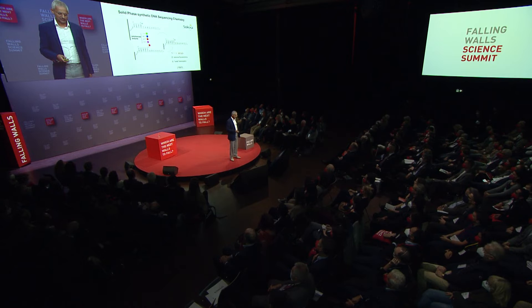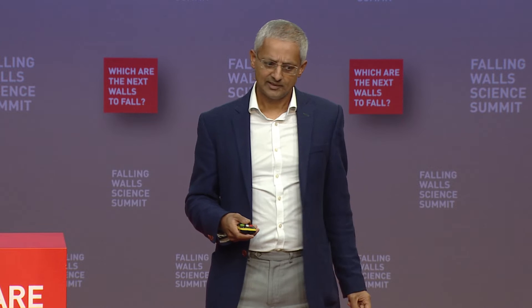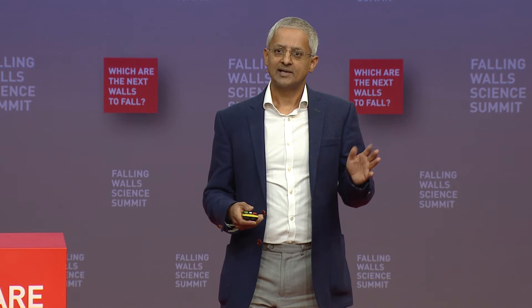The idea was to hijack the machines that nature uses to copy one strand and produce a complementary strand. Shown here on the top left, there's a single strand which is a template, and there's another strand that's going to be growing. By adapting what we were doing, if you could color code each of the four building blocks that go in and use nature's machines — called a polymerase — to incorporate the correct building block...